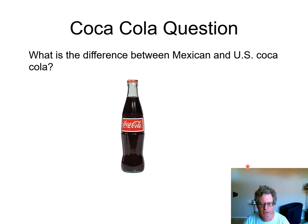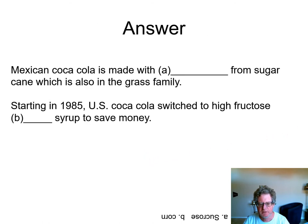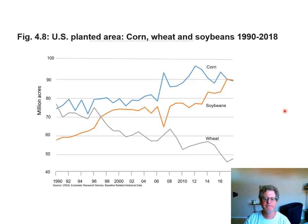If you go to Home Depot, you'll see they sell Mexican Coca-Cola. Some people like it better. What's the difference? It's made with sucrose from sugar cane, which is also in the grass family. Starting about 35 years ago, the US Coca-Cola company switched to high fructose corn syrup — it's less expensive and saves them money. Some people think the Coca-Cola made with sucrose tastes better and has more of a bite to it.